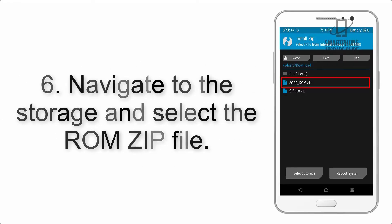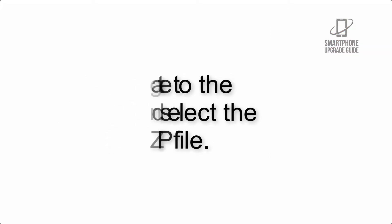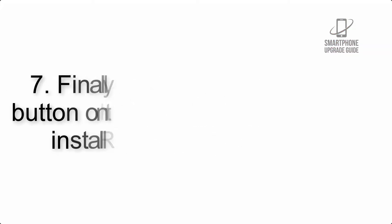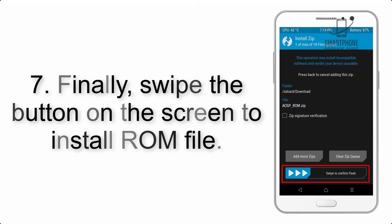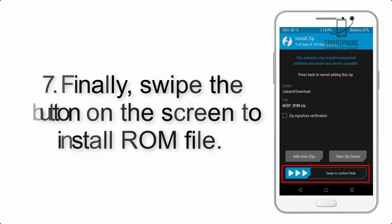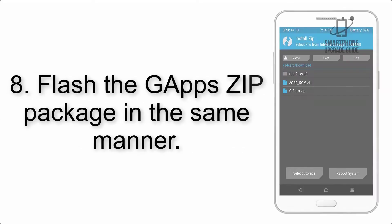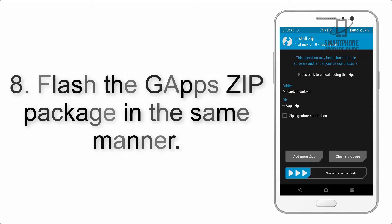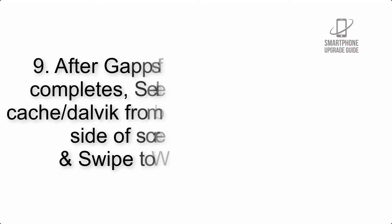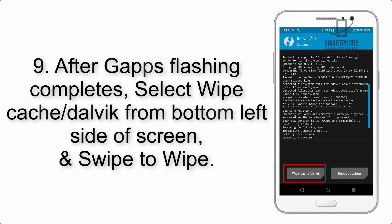Step 5: Go back to the recovery main screen and tap on the Install button. Step 6: Navigate to the storage and select the ROM zip file. Step 7: Finally, swipe the button on the screen to install the ROM file.